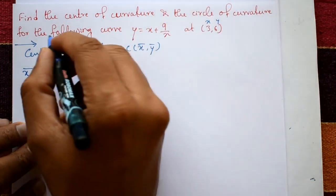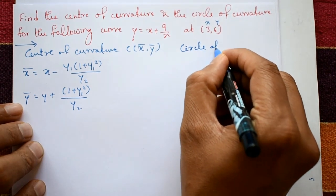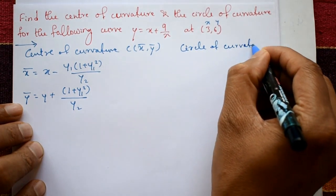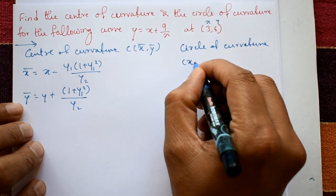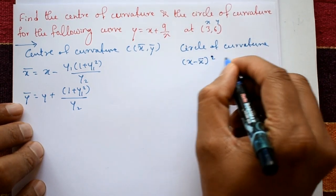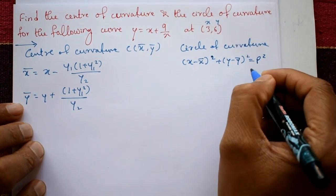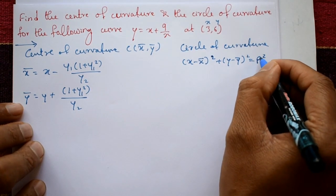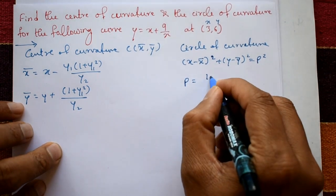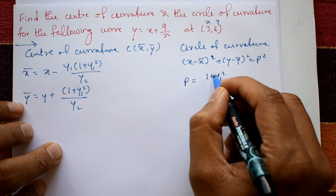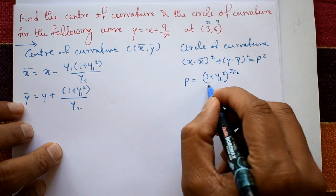Next we require the circle of curvature. The circle of curvature formula is: (x − x̄)² + (y − ȳ)² = ρ². First find ρ: ρ = (1 + y1²)^(3/2) / y2.